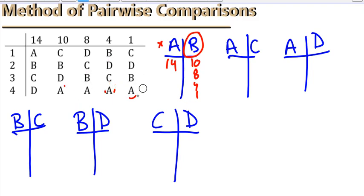Let's do this for the rest of the pairs. So, next, we're going to look at A versus C. We see that A gets the 14, C gets 10, C gets 8, C gets 4 and 1, C wins.